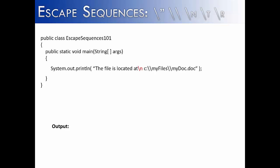The next escape sequence that we're going to talk about is the backslash n. And what the backslash n does is it creates a new line. So I put one after the file is located at. And you'll see when it outputs it treats it almost like another system out print line is right here inside of the code. So we see the file is located at on one line and then the next line says c colon my files my doc doc dot.